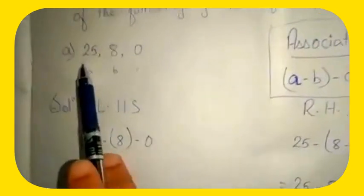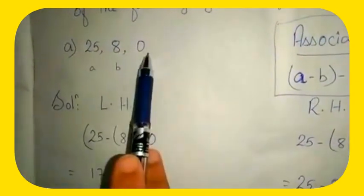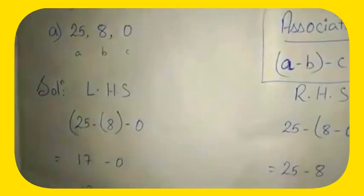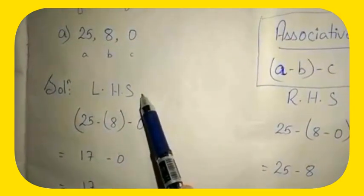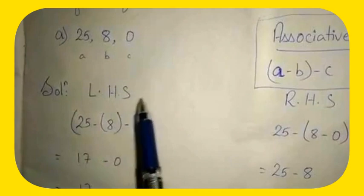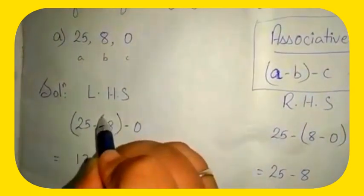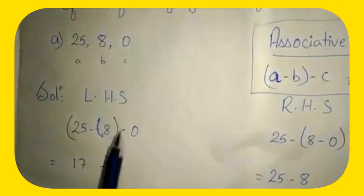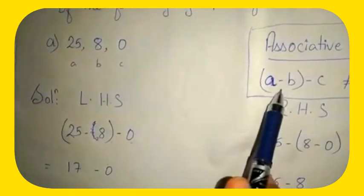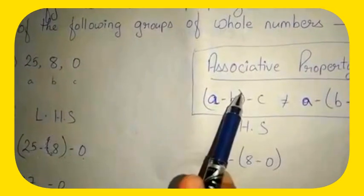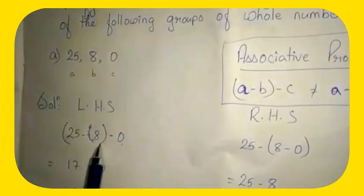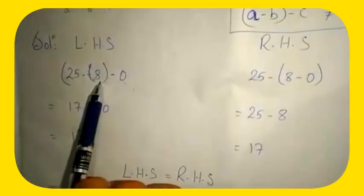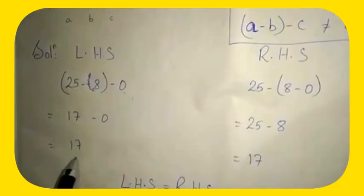Now let us solve the first question. Here it is given as 25, 8, and 0. Let us represent 25 as a, 8 as b, and 0 as c. First let us solve the LHS part. In LHS: (25 minus 8) minus 0. Solving the bracket: 25 minus 8 is 17, then 17 minus 0 is 17.